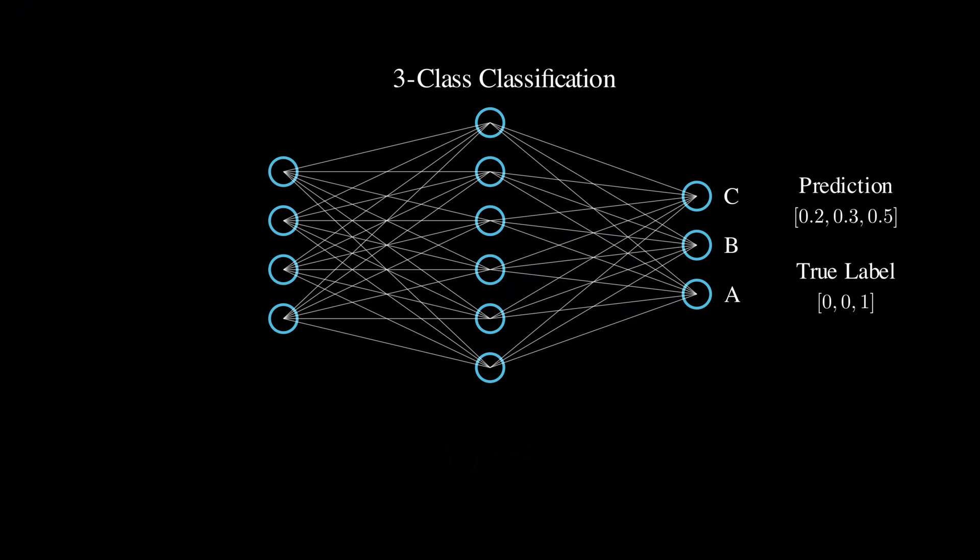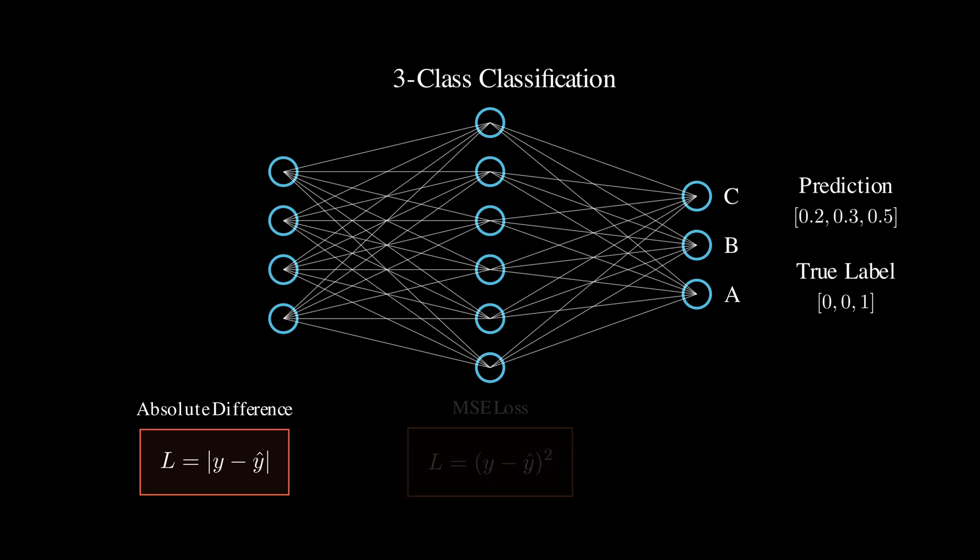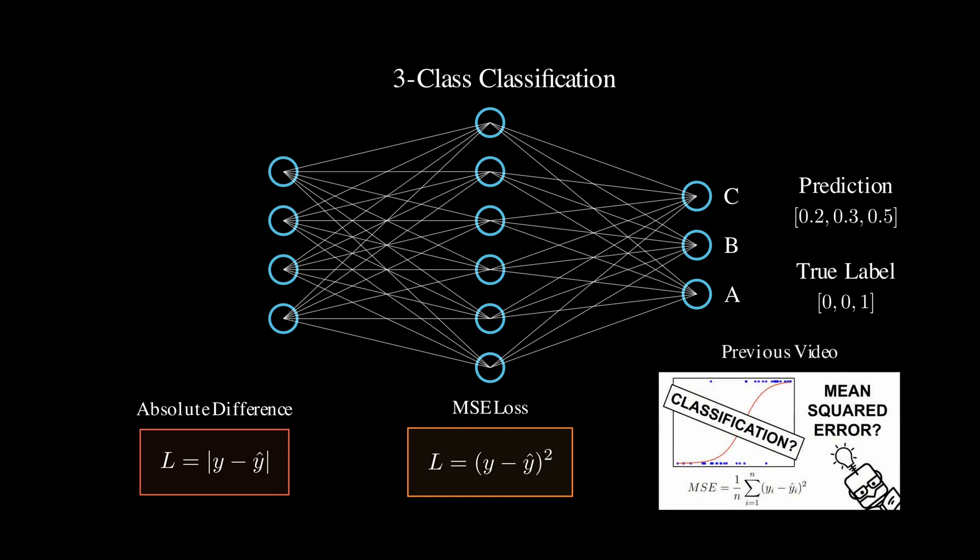You might think to just take the absolute difference or use the mean squared error. These seem reasonable, but they are actually not great choices for classification. I've explained why in another video.